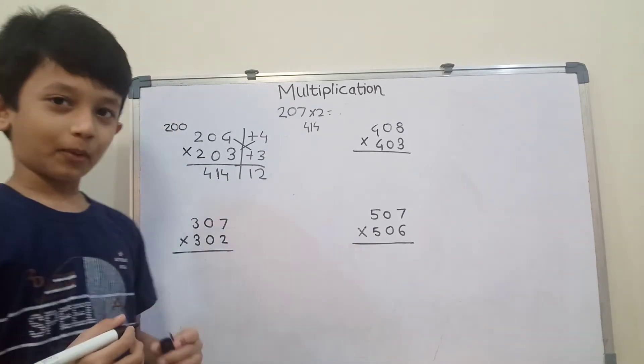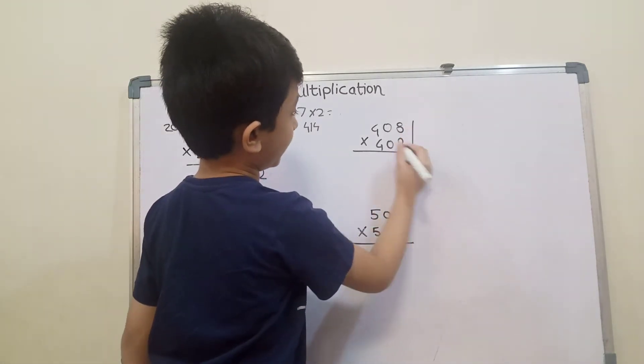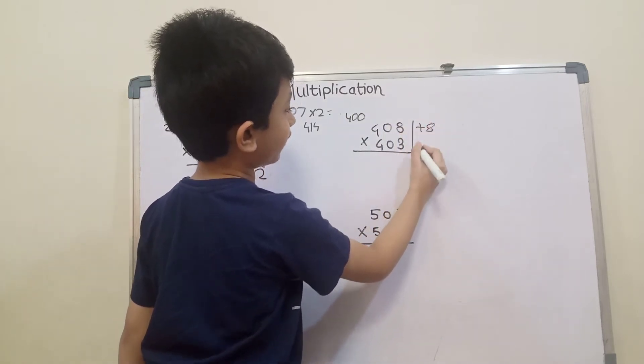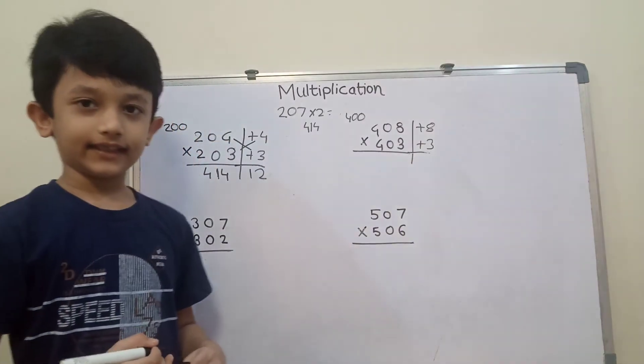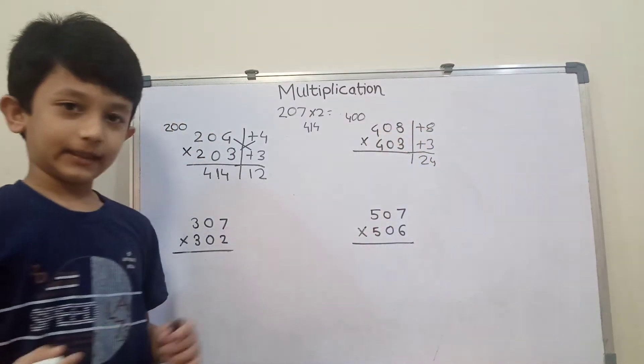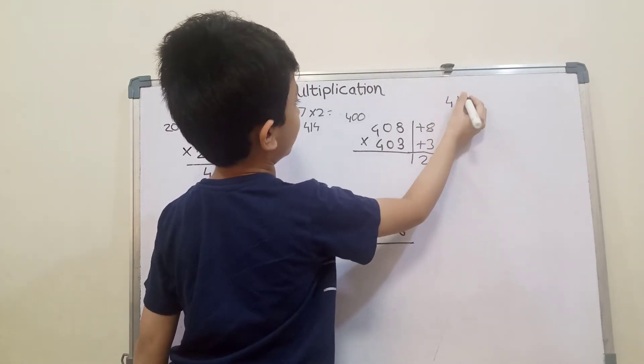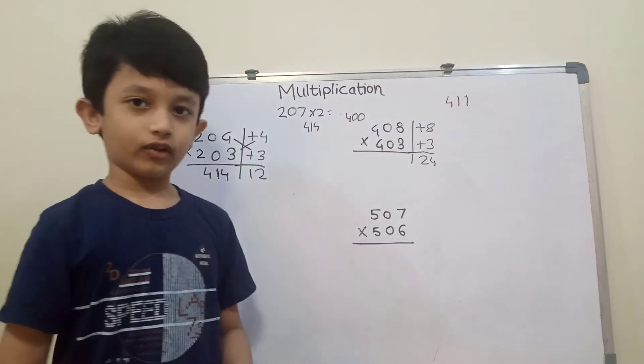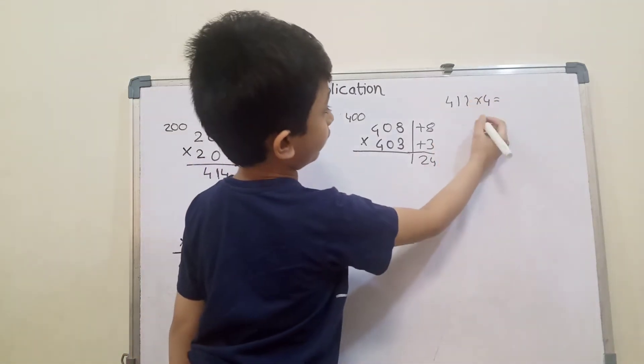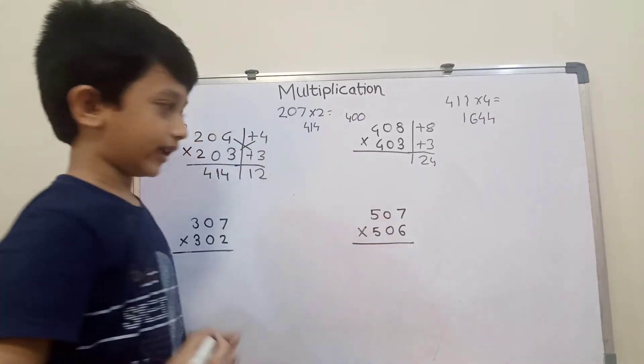Let's start with next problem: 408 into 403. The base is 400. 400 plus 8 here and plus 3 here. 8 times 3 is 24. 408 plus 3 equals 411. 4 times 4 is 16. So the answer is 164,424.